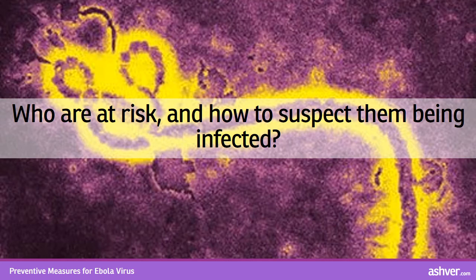The Ebola virus is pantropic, with viral replication taking place in almost all organs. Initial symptoms are non-specific and include fever, intense weakness, muscle pain, headache, and sore throat. This is followed by vomiting, diarrhea, and impaired kidney and liver functions. The most reliable feature is the appearance of a non-itchy maculopapular rash that begins on the face and neck.